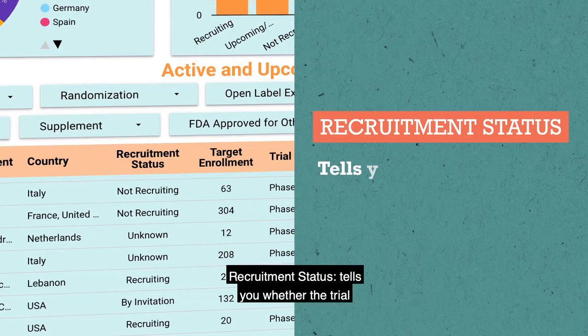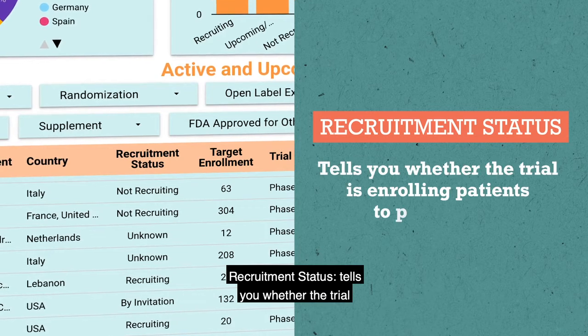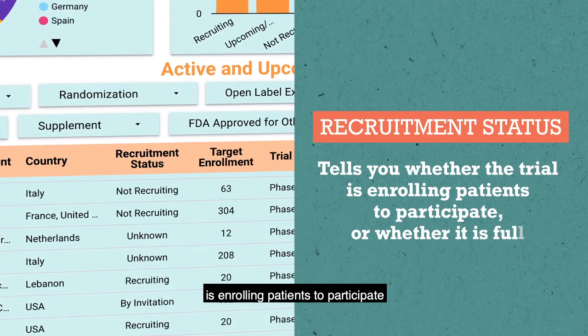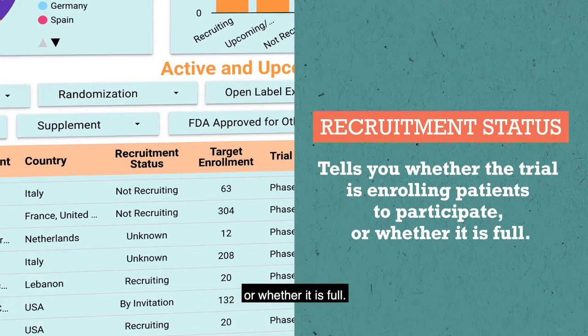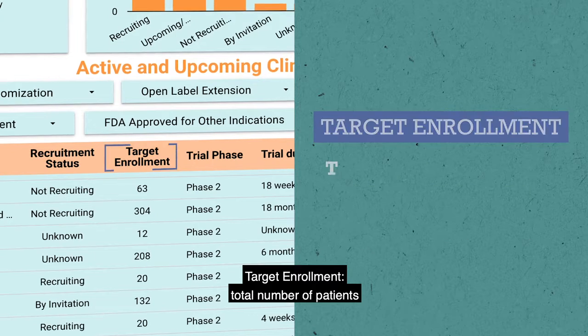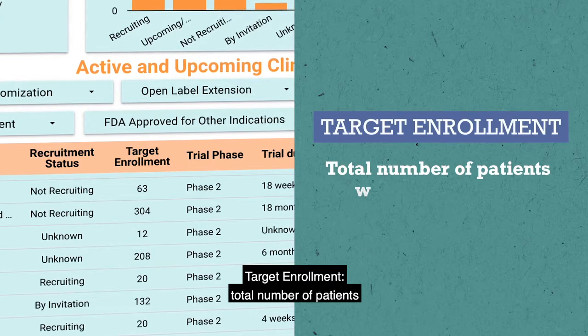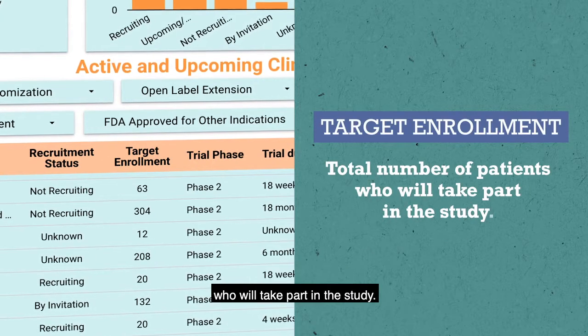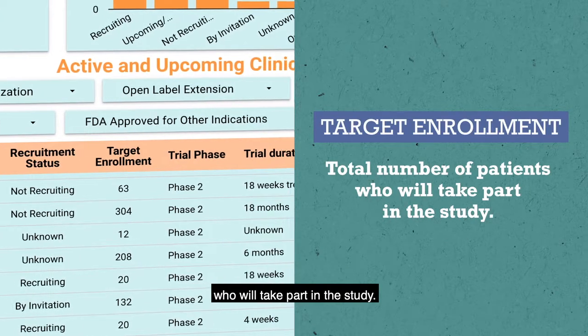Recruitment status: tells you whether the trial is enrolling patients to participate or whether it is full. Target enrollment: the total number of patients who will take part in the study.